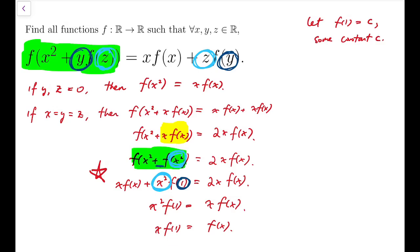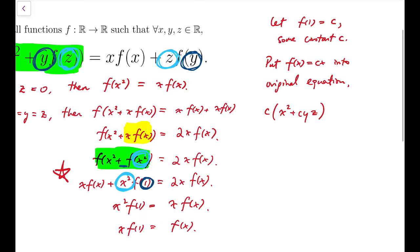Then we put this into the original equation, and we'll have c times x squared plus cyz equals cx squared plus cx squared. And we can cancel out the cx squared, and we will have c squared yz equals c yz.